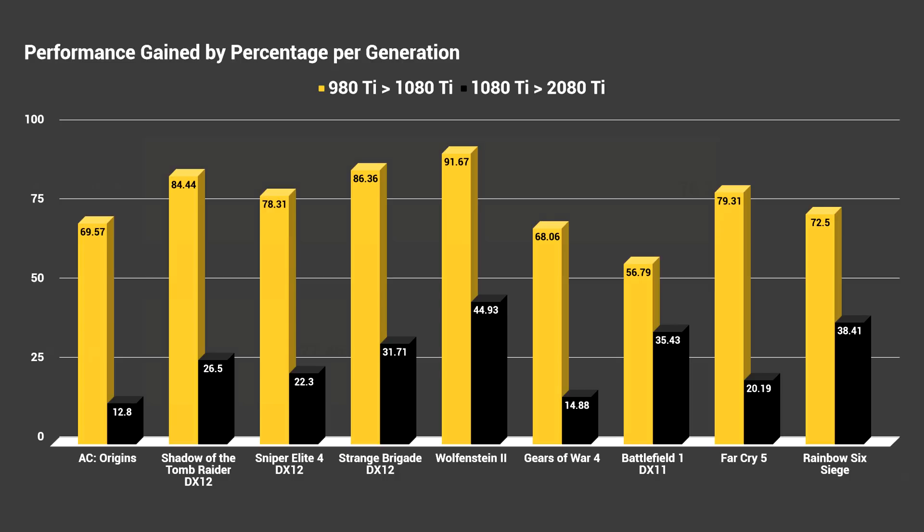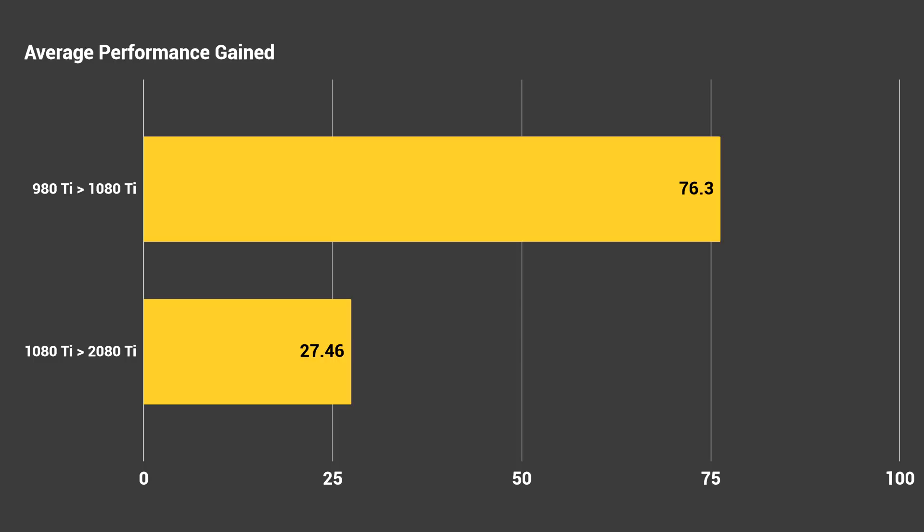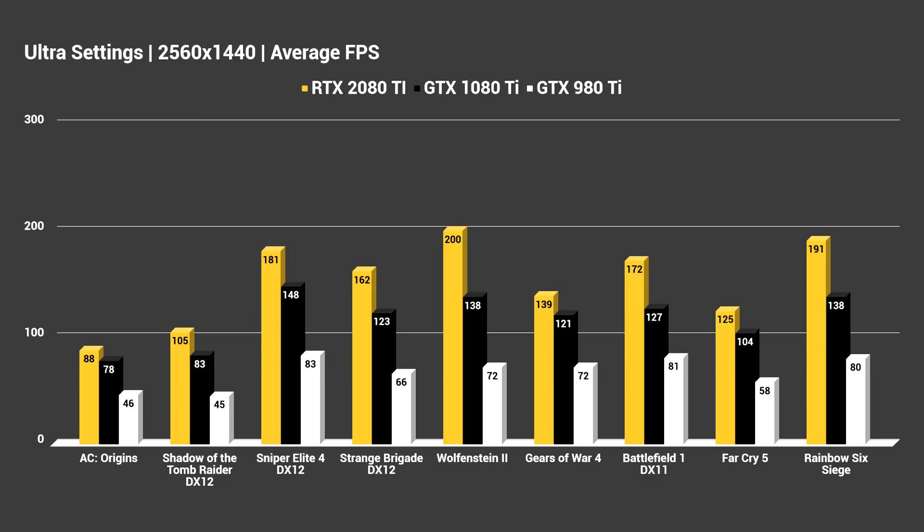Overall, the 980Ti to 1080Ti averaged a 76.3% performance improvement, while the 1080Ti to the $1,200 2080Ti was just a measly 27.46%. This really gives credence to what many people have said: the 2080Ti should have been the 2080, the 2080 should have been the 2070, and then we could have gotten a Ti later — delivering performance increases like we saw with Pascal versus Maxwell. I don't know what NVIDIA was thinking charging $1,200 for a card barely getting 20–30% gains, and even lower than 20% in several of these games.